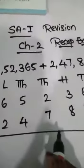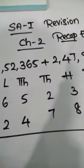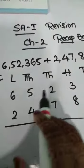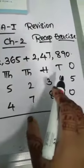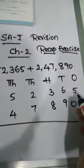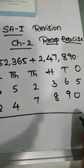So like this we have to solve this. See here — I have written: 6,52,365 plus 2,47,890. So we have to add this.